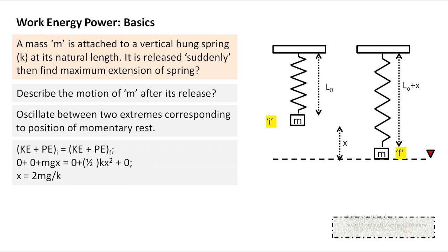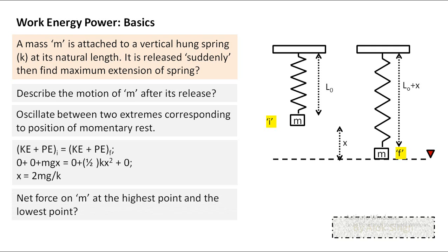To understand this better: at the highest point (natural length), net force = mg downward (spring force = 0). At the lowest point (extension 2mg/k), spring force = k × (2mg/k) = 2mg upward, gravity = mg downward, so net force = mg upward. Both extreme positions have the same magnitude of acceleration g but in opposite directions. Exactly at the midpoint the acceleration is zero. This oscillatory motion will be studied in greater detail in SHM.